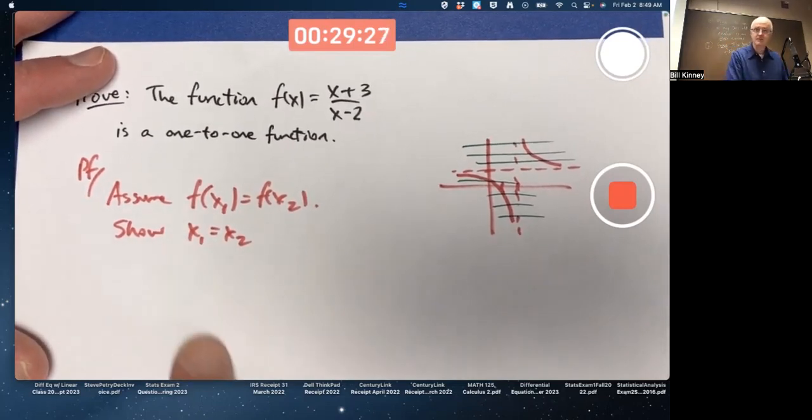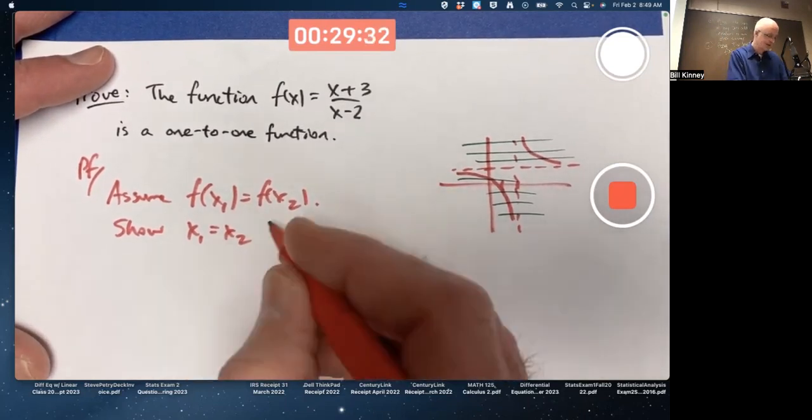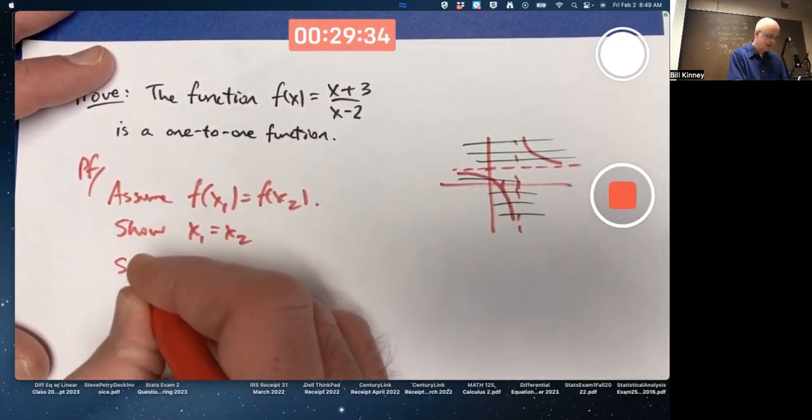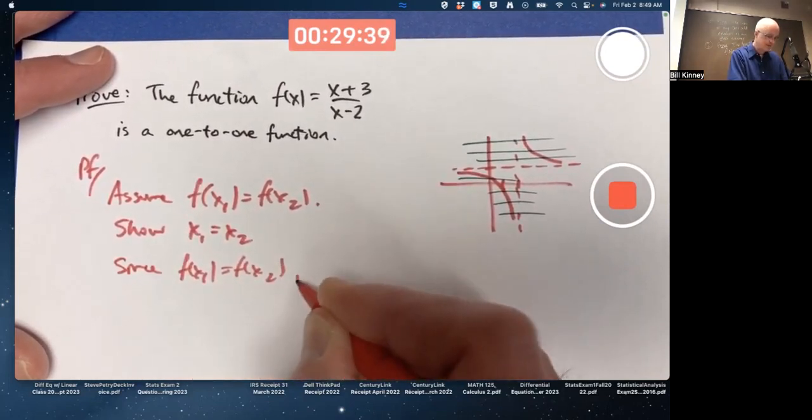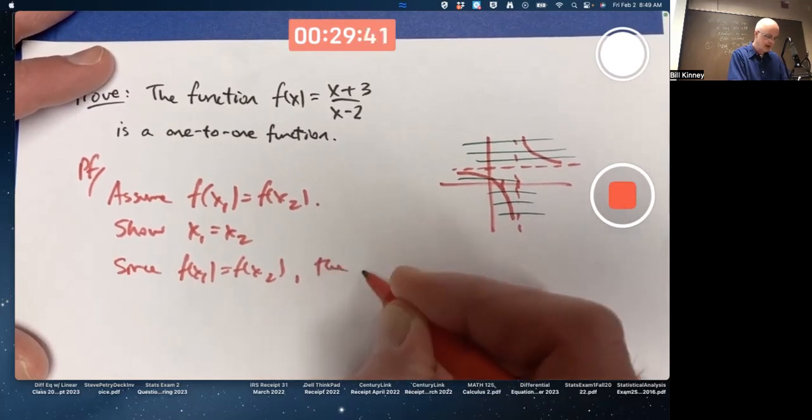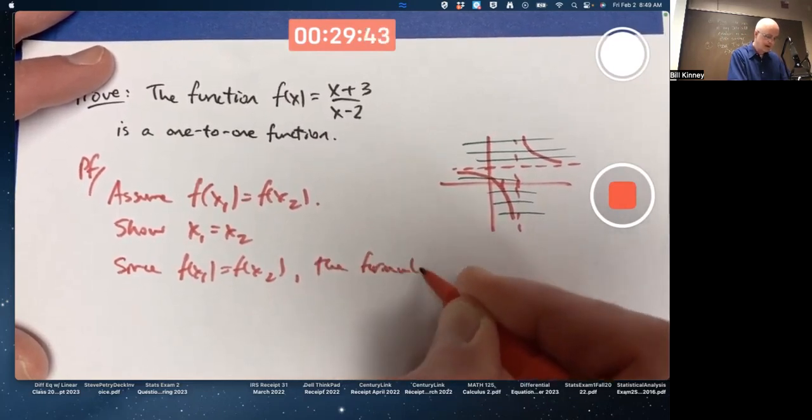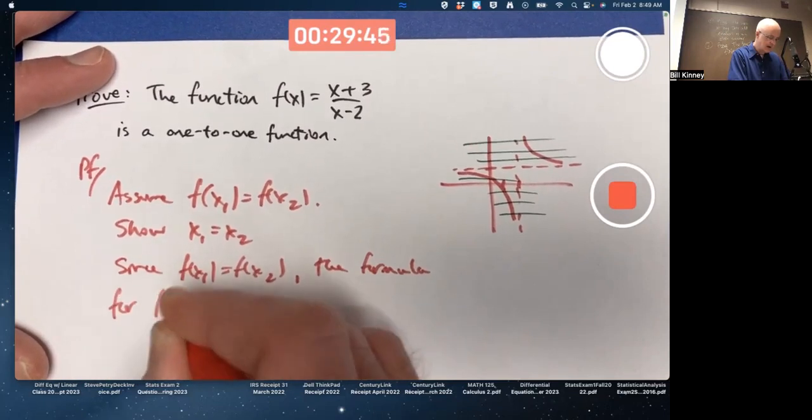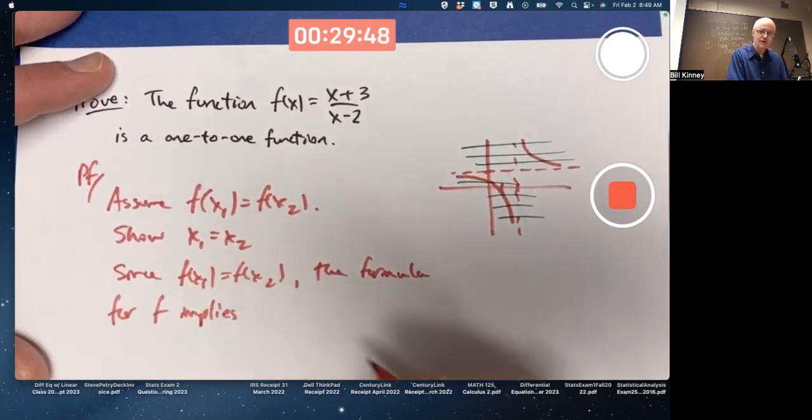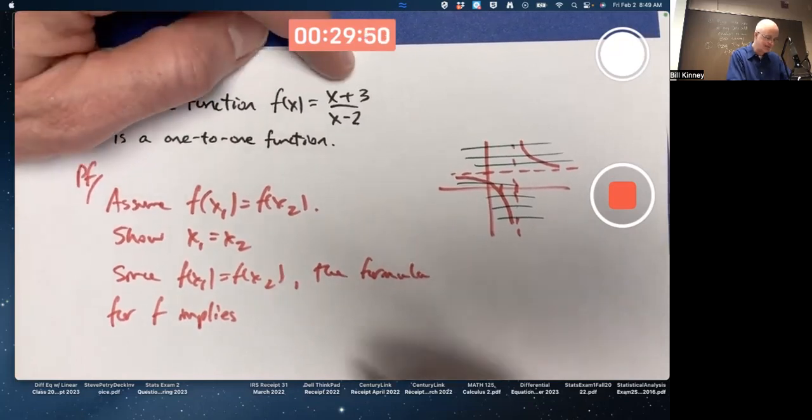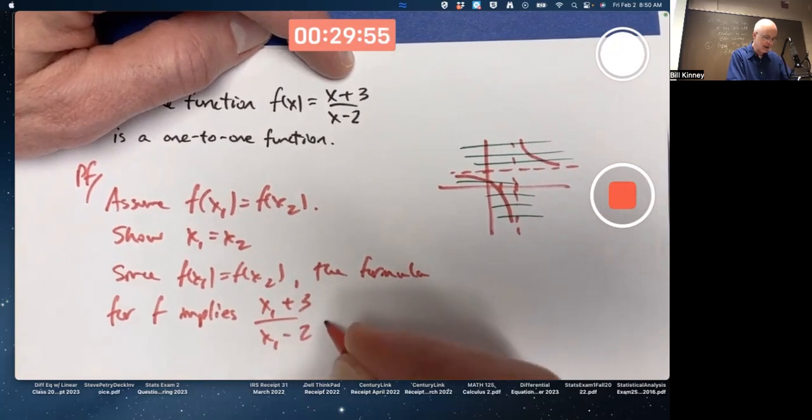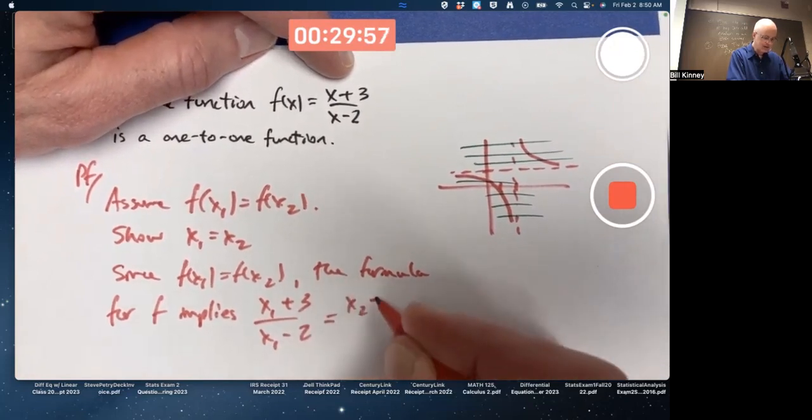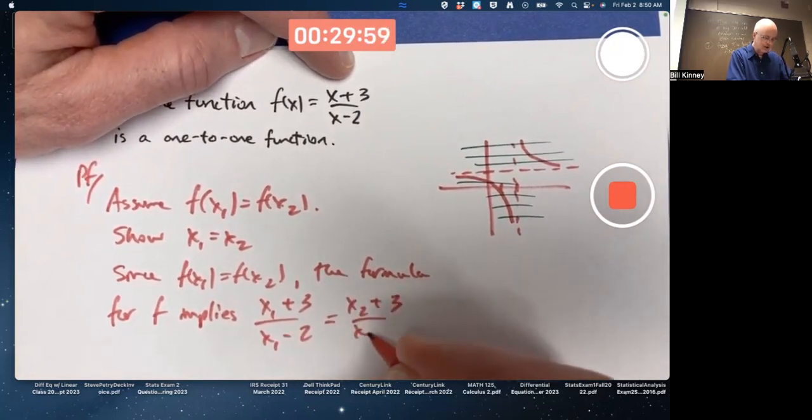So, this is what you've got to do. How do you do it? It's just some algebra. Since f of x1 equals f of x2, the formula for f implies what? Implies if you plug in those two numbers, x1 and x2 here, you'll get the same thing. x1 plus 3 over x1 minus 2 equals x2 plus 3 over x2 minus 2.